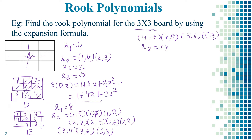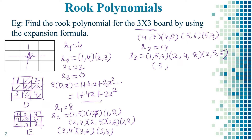For R3 on board E, placing three rooks: combinations include (1,5,7), (2,4,8), (2,5,6), and (3,4,7). These are all the valid placements for three rooks, so R3 = 4.